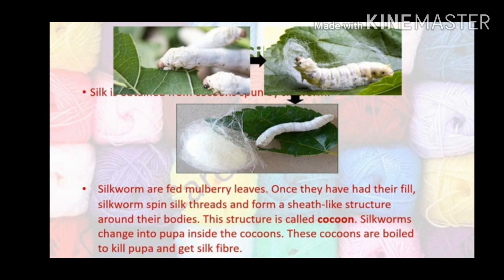Now see these are the silkworms. Silkworms feed on mulberry leaves, and they eat and eat. When they fully grow up, they start winding a thread-like structure, which is made up of protein, around their body. They make a ball which is called a cocoon. You can see white ball-like structures. Inside this, the worm is killed after boiling, and silk threads are obtained from these cocoons.